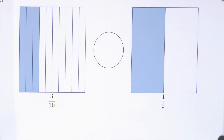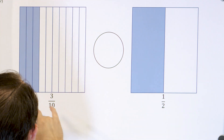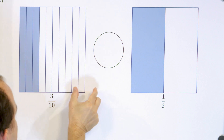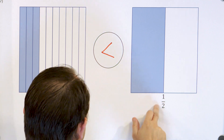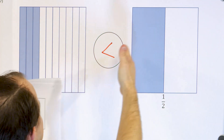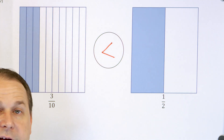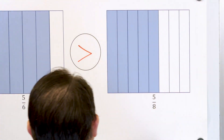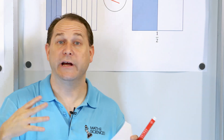Going back to rectangles: here we have three tenths — three out of ten — compared to one half, one out of two pieces. You can see immediately that three tenths is the smaller shaded region. So the arrow points to the smaller number, and the fraction three tenths is less than the fraction one half. When comparing same-size objects like this, we compare fractions by looking at which is the smaller shaded amount. You can't figure this out just by looking at the numbers — you have to draw pictures.